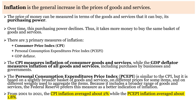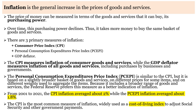Over the past 20 years, the CPI inflation averaged about 2%, while the PCEPI inflation averaged about 1.8%, slightly lower. However, the CPI is the most common measure of inflation, widely used as a cost-of-living index to adjust Social Security and other government payments.